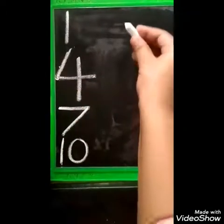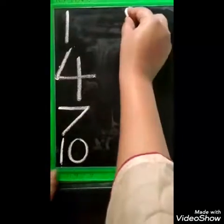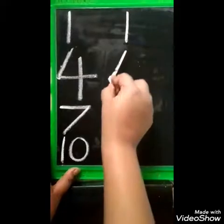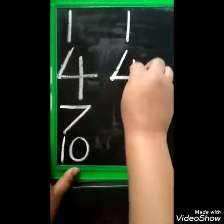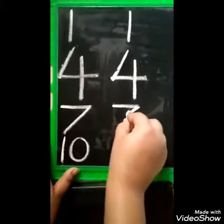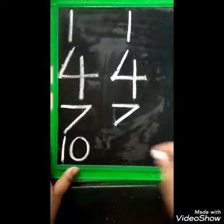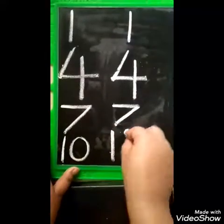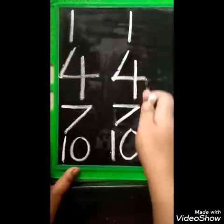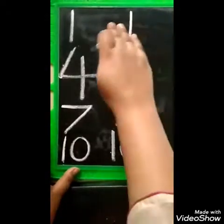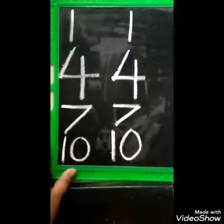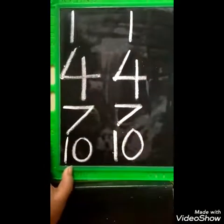One more time, let us write. Standing line, number 1. Slanting line, sleeping line and a standing line, number 4. Sleeping and slanting line, number 7. Number 7, 1 and 0, number 10. So we write numbers vertically and letters horizontally. You will write numbers in a vertical manner. So these are the numbers we have done so far.